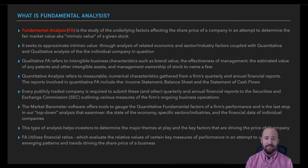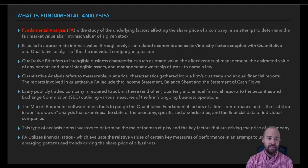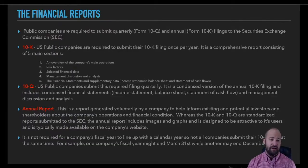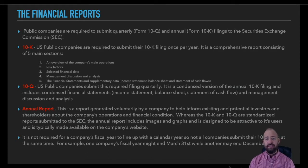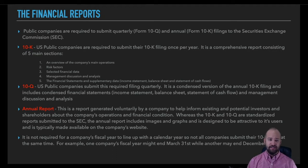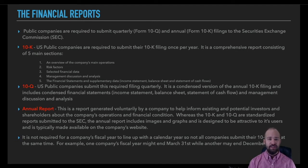Before we dive into the financial statements in particular, let's lay some groundwork by talking about the financial reports that publicly traded companies here in the United States are required to file with the Securities and Exchange Commission — the SEC. The first financial report we'll talk about is the 10-K. US public companies are required to submit their 10-K filing once a year — this is their annual filing with the SEC. It's a more comprehensive report consisting of five main sections: an overview of the company's main operations, risk factors, selected financial data, management discussion and analysis, and then the financial statements and supplementary data — which include the income statement, balance sheet, and statement of cash flows.